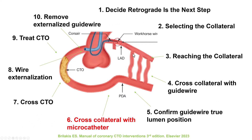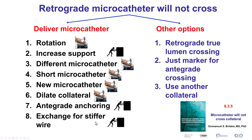Step number six, after the guidewire crosses the collateral, is to cross the collateral with a microcatheter. This is often easy, but sometimes it may be challenging. There will be a specific video — 8.3.5 — that will discuss the various options for delivering a microcatheter through challenging collateral vessels.